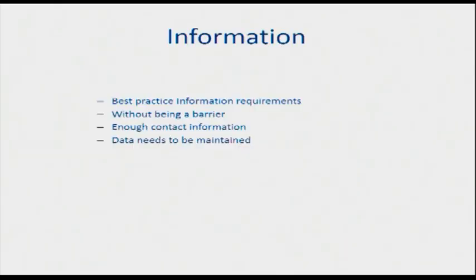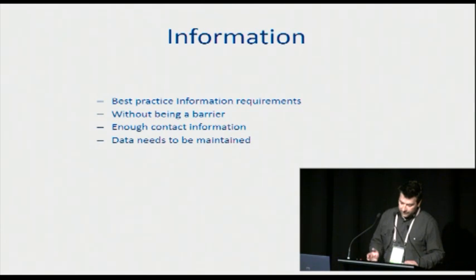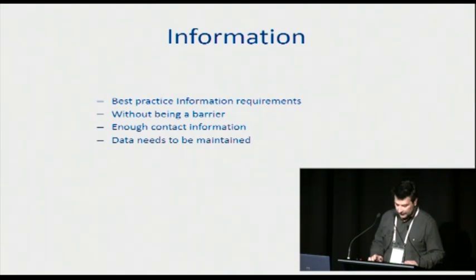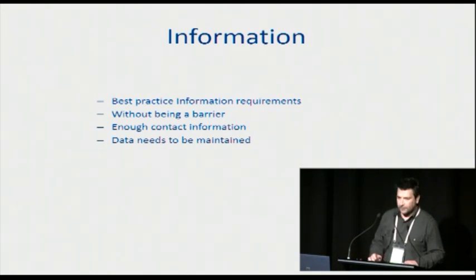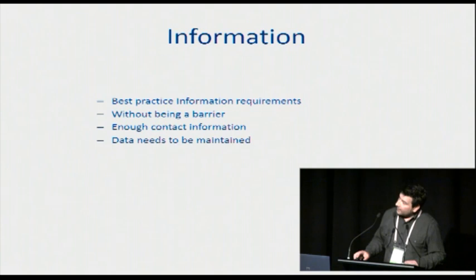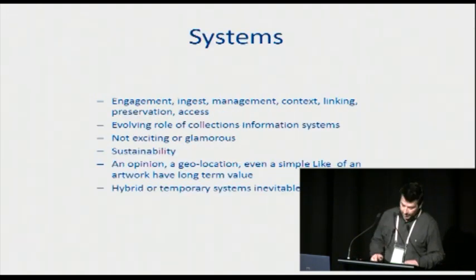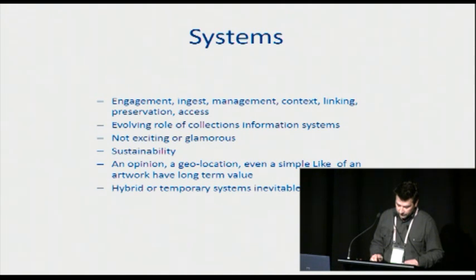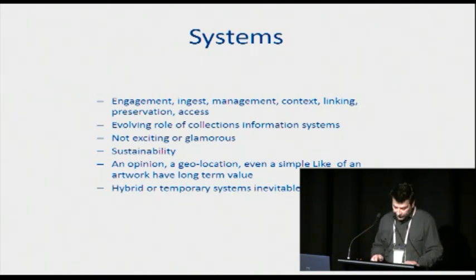We need information. We're not getting enough information with the content that we gather. The more effort required by the contributor in creating and providing content to us, the more effort needs to go into gathering the information. A minimum of information requirements without being a barrier — a draft I'm looking at now is 5 to 15 fields depending on the context of the collection. This includes enough contact information so we can actually go back to the contributor if we need to. The information needs to be maintained and so does the content — ingest, management, context linking, preservation, access. These are things generally not considered as part of engagement projects. It highlights the evolving roles of collections information systems versus separate systems built on an ad hoc basis for each project, which may not be sustainable.